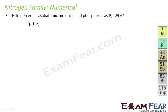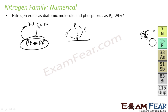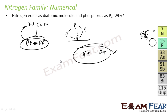The next question: why does nitrogen exist as a diatomic molecule but phosphorus exists as P4? Nitrogen is small in size and forms a pπ-pπ triple bond with itself, making N2 very stable and difficult to break. Phosphorus is bigger in size — almost 80% larger — so it cannot form pπ-pπ bonds with itself. Instead it exists as P4.